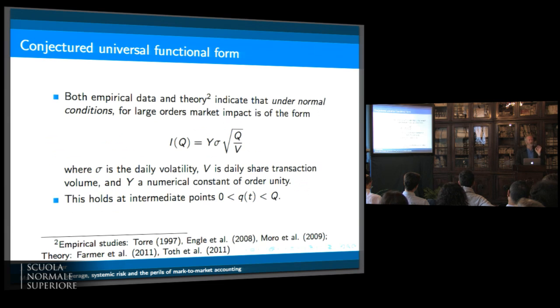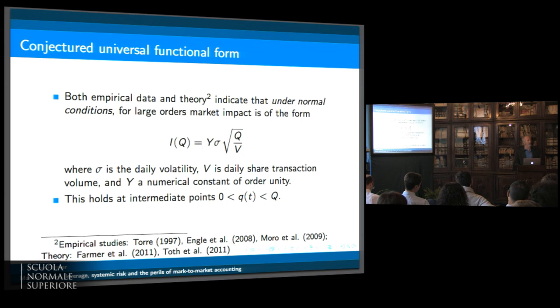Our theory actually doesn't say it's exactly a square root unless a certain exponent is exactly a half, which is the long memory of the order flow. But I'm getting into details that probably aren't so important for the rest of the talk.